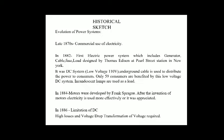AC was introduced by Nikola Tesla, while the system proposed by Edison was a DC system running at a low voltage of 110 volts. Underground cable was used to distribute power to consumers — only 59 consumers were benefited by this low voltage DC system. Incandescent lamps were used as a load.